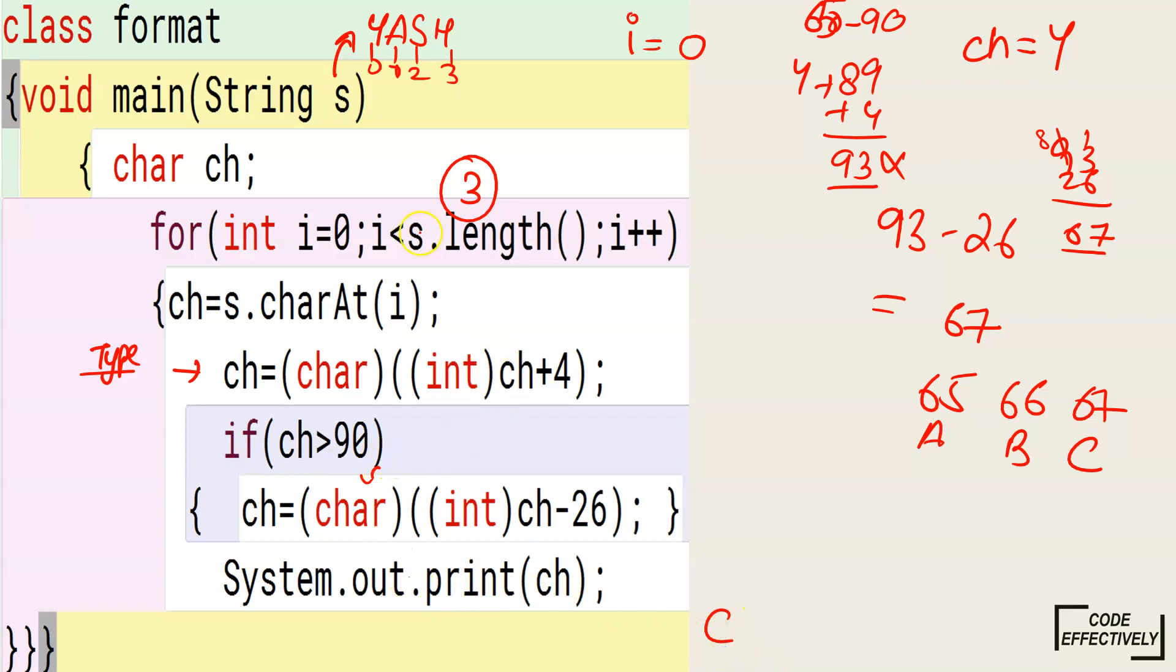Again, the loop will go up and the value, it will check, i will be now 1. When the value of i will be 1, it will come: ch is equal to s.charAt(i). What is the value of i? I value is 1. So it will take ch will take now A, the value of A. Now, first it will convert A into integer type. You know the ASCII value of A is 65. Now, 65 plus 4, what will it be? 69.